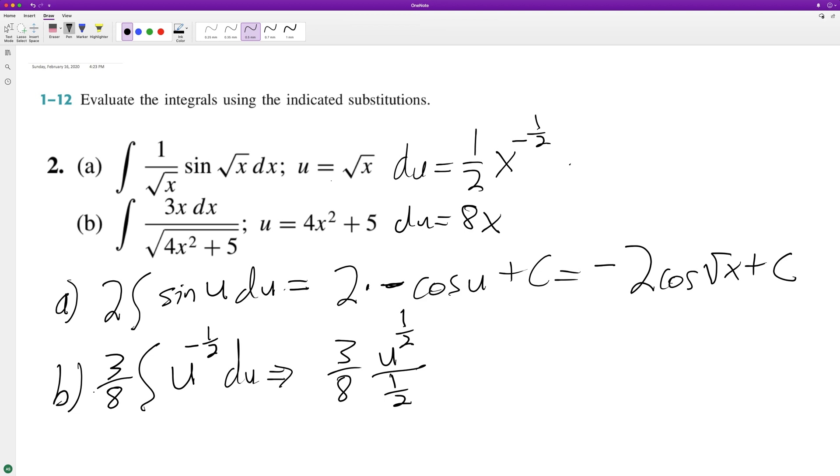So 6 over 8, which is 3/4. Substitute back in for u, and we get the square root of 4x squared plus 5 plus C. If you want, you can put the 4 in the denominator.